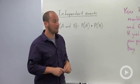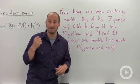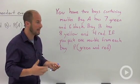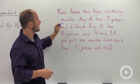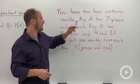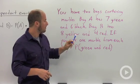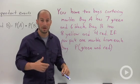One classic example for independent probability is basically pulling balls or marbles out of a bag. And so what we're looking at in this case is we have two bags containing marbles. Bag A has seven green and six black. Bag B has eight yellow and four red. If we pick one marble from each bag, find the probability that we choose a green and a red.